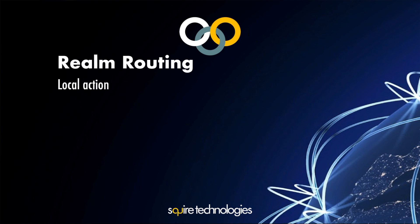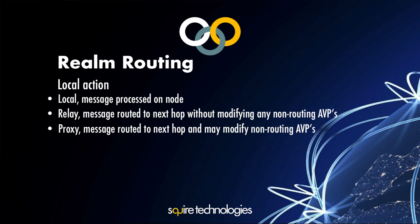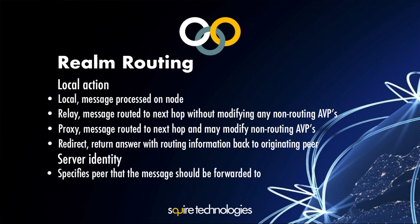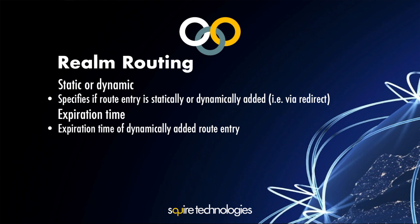The local action field defines what to do with the message: local means the message is processed on this node; relay means route to the next hop without modifying any non-routing AVPs; proxy means route to the next hop and may modify non-routing AVPs; redirect means return answer routing information back to the originating node. The server identity field names the node to route the message to. The static or dynamic field indicates whether the route was configured or dynamically discovered — redirect entries are dynamic and have a lifetime in the routing table before querying the redirect server again.